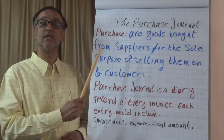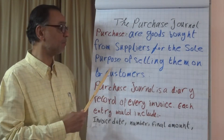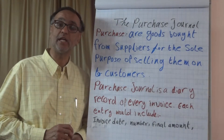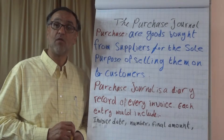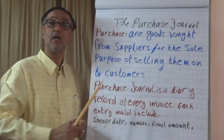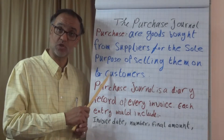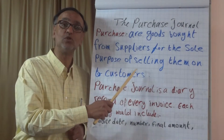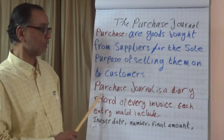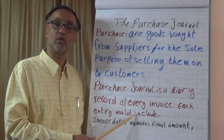Purchase is defined as goods bought from suppliers for the sole purpose of selling them on to customers. That means any item that the business buys for its own use is not considered a purchase and accordingly it's not recorded in the purchase journal but it's recorded in the general journal. The purchase journal is only for items intended to be sold to customers, and it is a diary where every transaction and every invoice or purchase is recorded on a daily basis.